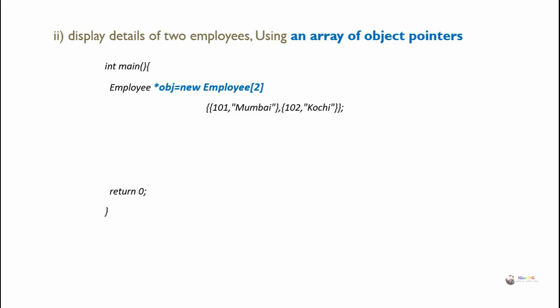So 102 is the emp_id and Kochi is the emp_name for the second object. During creation, these values are passed into the parameterized constructor, initializing the respective data members. There are two objects for this pointer obj. To access the method, we use the arrow operator. To call display for the first object, we write obj arrow display, where obj acts as the first object. To move to the next object, we write plus plus obj, pointing to the second object.